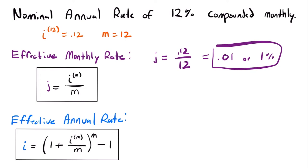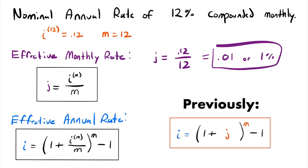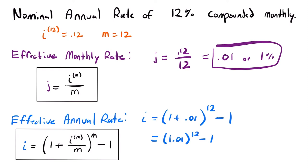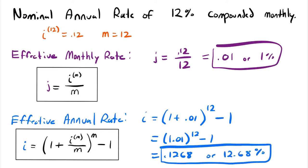For the effective annual rate, we take that same calculation — nominal annual rate divided by m — add one, raise it to the power m, and subtract one. This equals (1 + 0.01)^12 − 1, which is 1.01^12 − 1, giving us 0.1268, or 12.68%. That is our annual effective interest rate equivalent to the nominal annual rate of 12% compounded monthly.